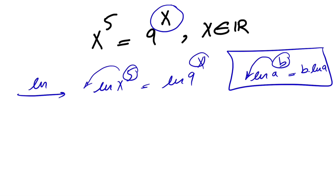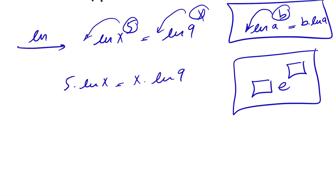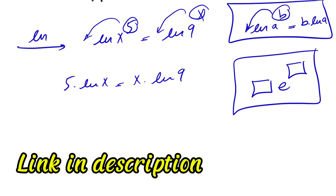Keeping that in mind, 5 can go to the back and x can go to the back too, so we get 5·ln(x) = x·ln(9). What we're interested in for the Lambert W function is something of the form [box]·e^[box]. We have many videos on the channel about the Lambert W function concept, so feel free to check those out.